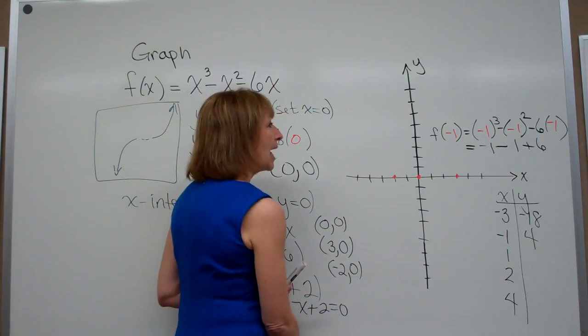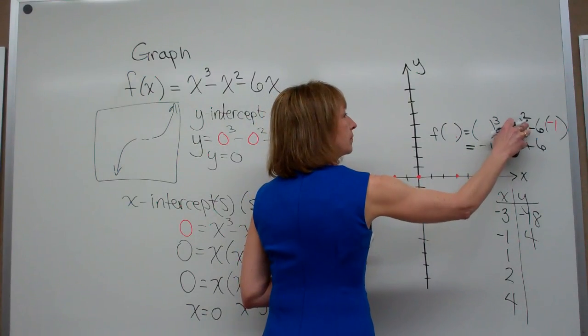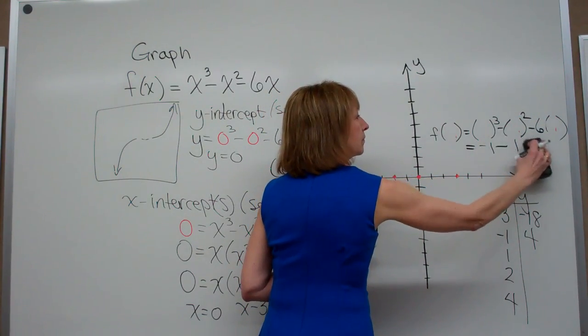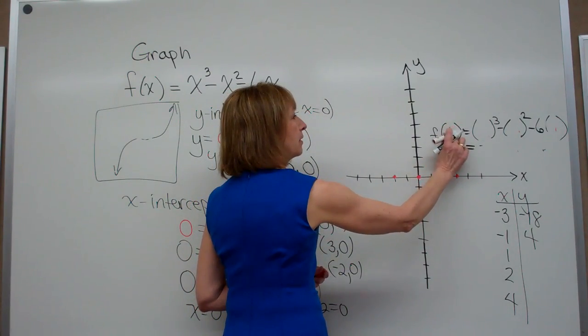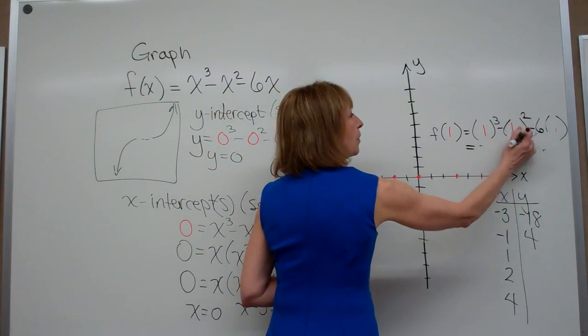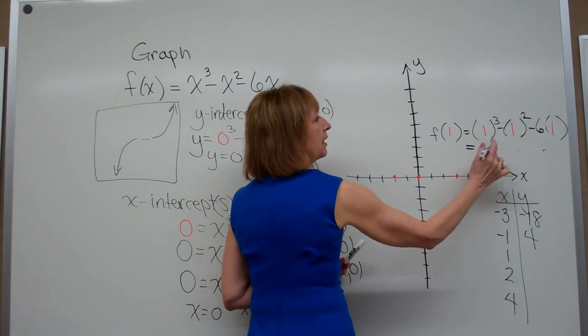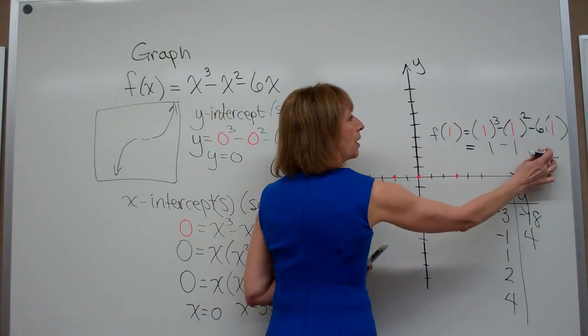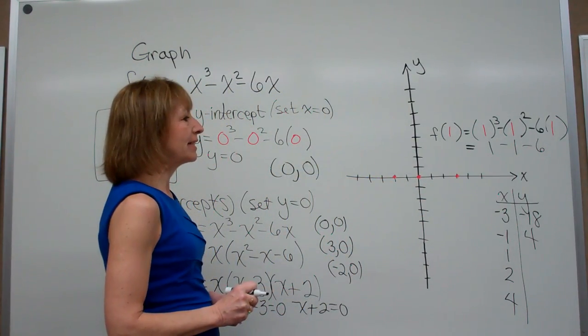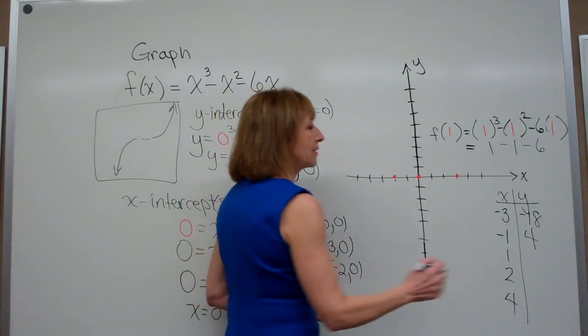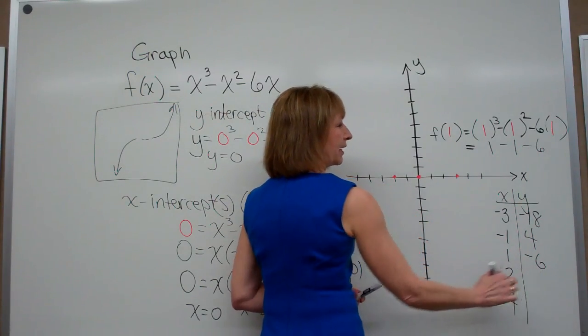When x is positive 1, we have f(1) = 1³ - 1² - 6(1). Well, that gives me 1 - 1, and then -6, so I get -6 out when x is 1. 1 - 1 is 0, and then -6 gives me -6.